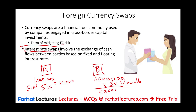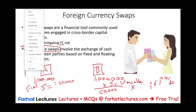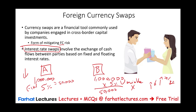Company B got a variable rate because they cannot get a fixed rate — they don't have good credit. But Company B hates this variable rate. They don't want to take the chance of interest rates going up to 6%, 7%, 8%, because their payment will go up. Company A, on the other hand, is comfortable and thinks interest rates are going to go down to 4%, so they would rather have a variable rate.